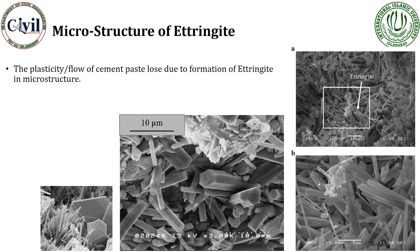In initial setting, there would be a loss of plasticity and flow. The growth of ettringite, which are needle-like structures, will hinder the flow of the cement paste. So in the formation of ettringite, the flow of the cement paste would be reduced.